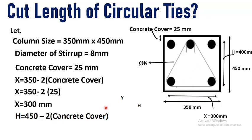So what is h? H is the height of this triangle that is equal to 450 minus 2 into concrete cover. That is by subtracting concrete cover from both sides, we will get the height of this triangular stirrup.